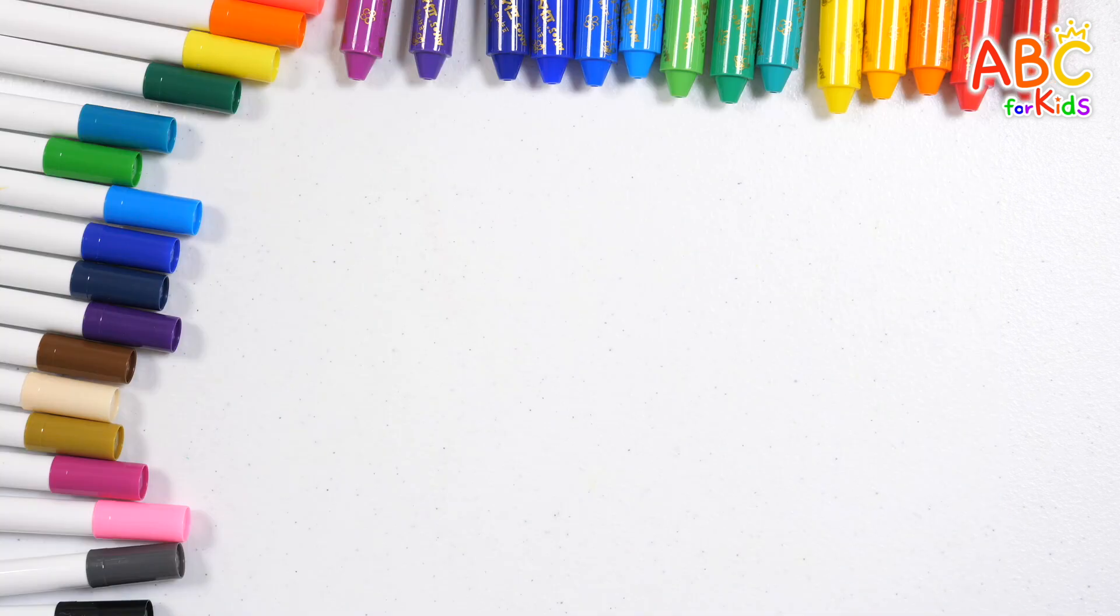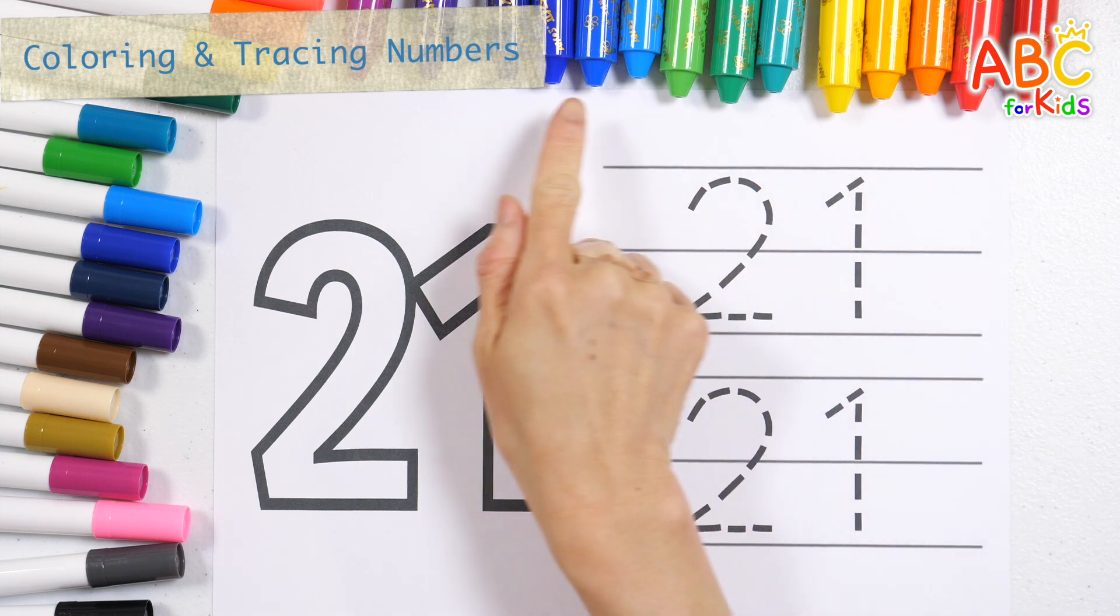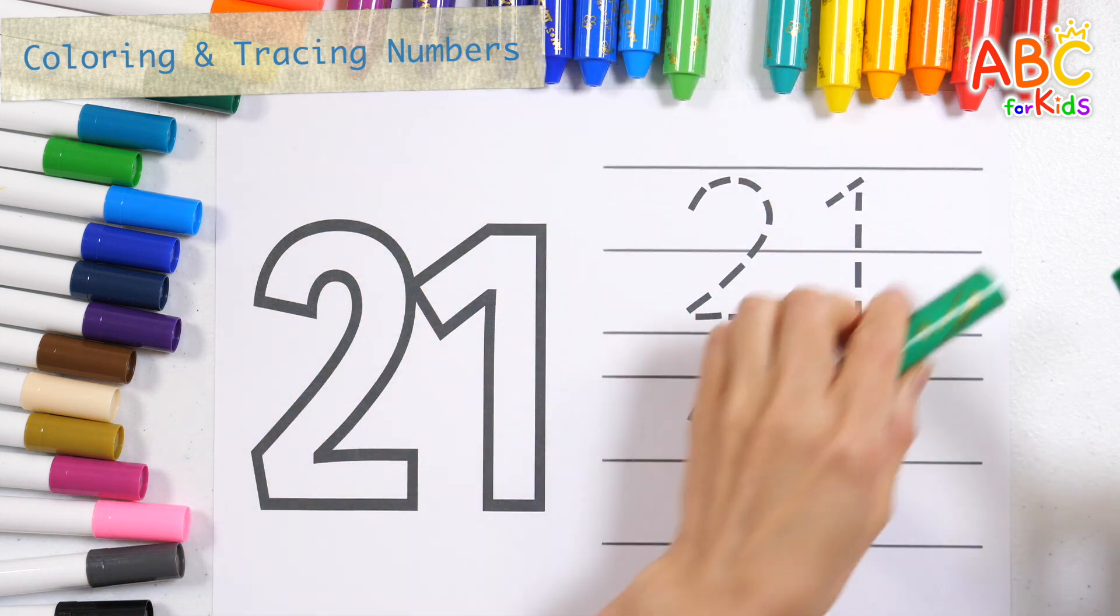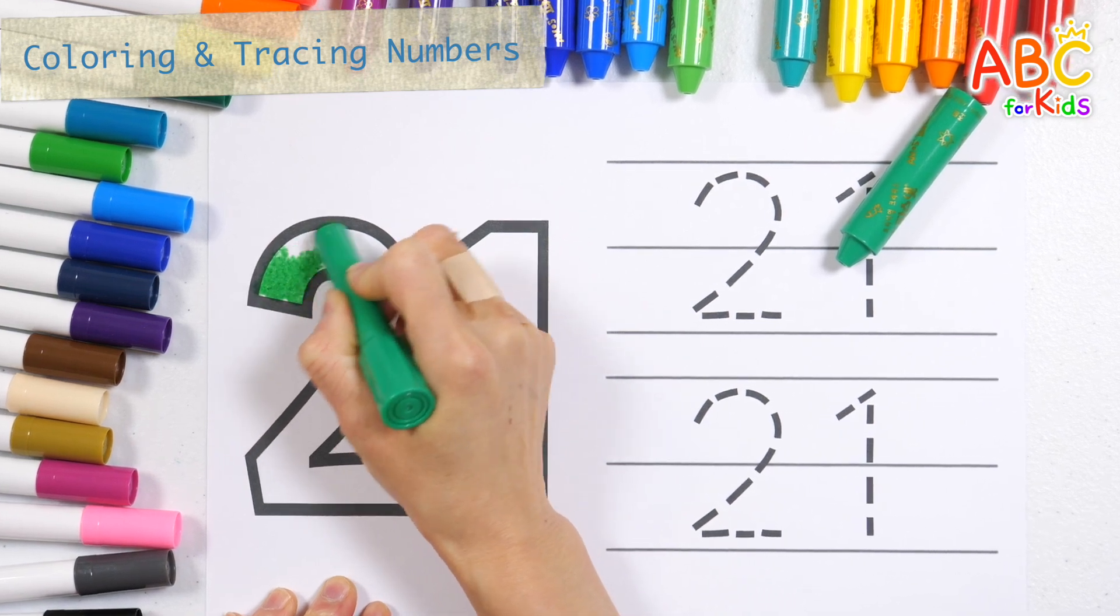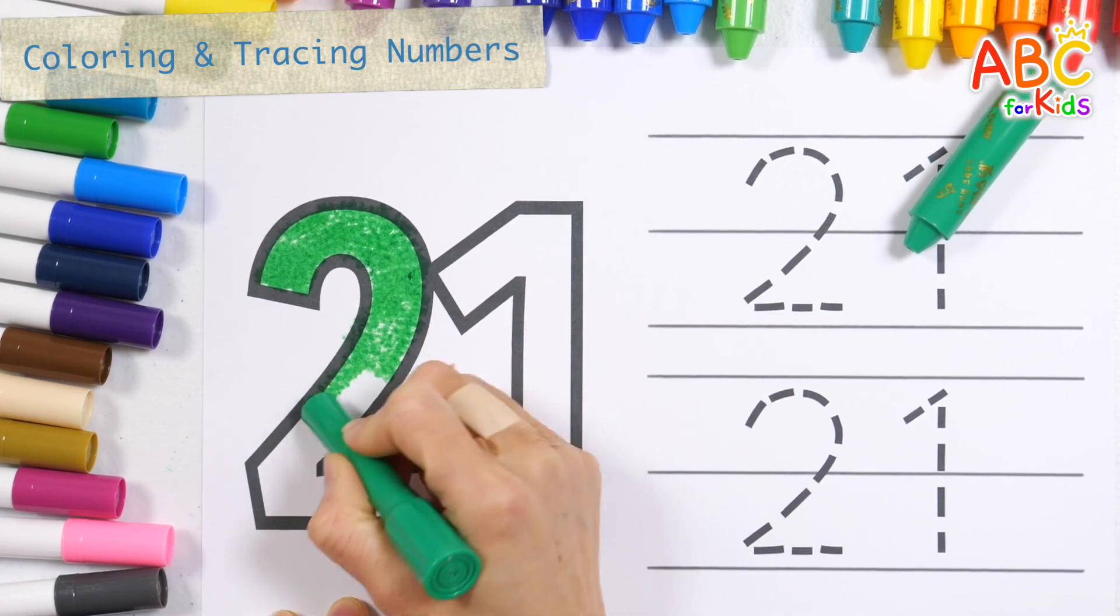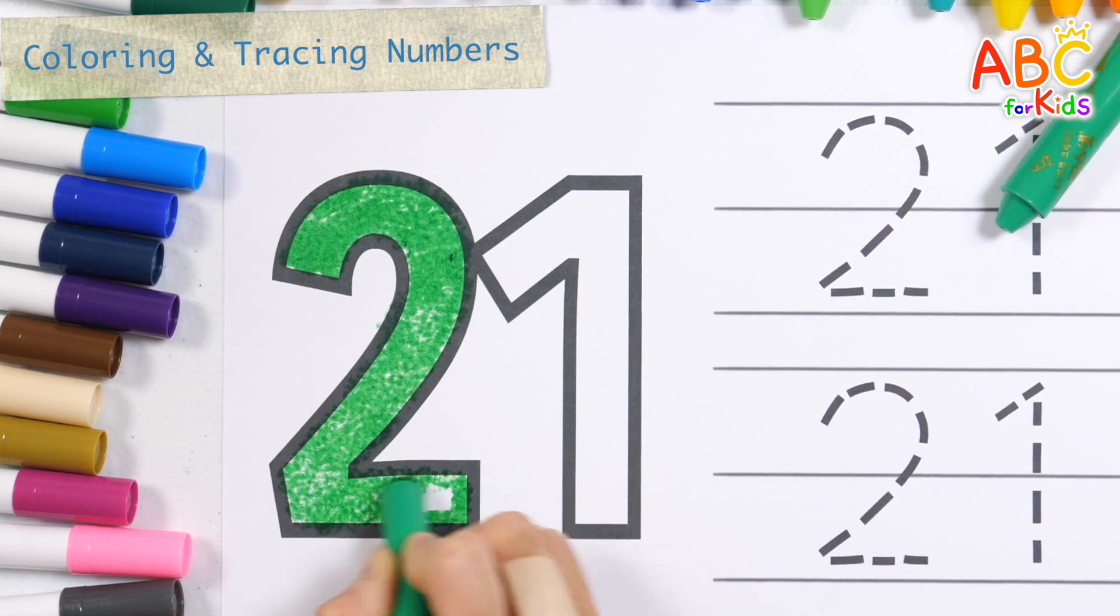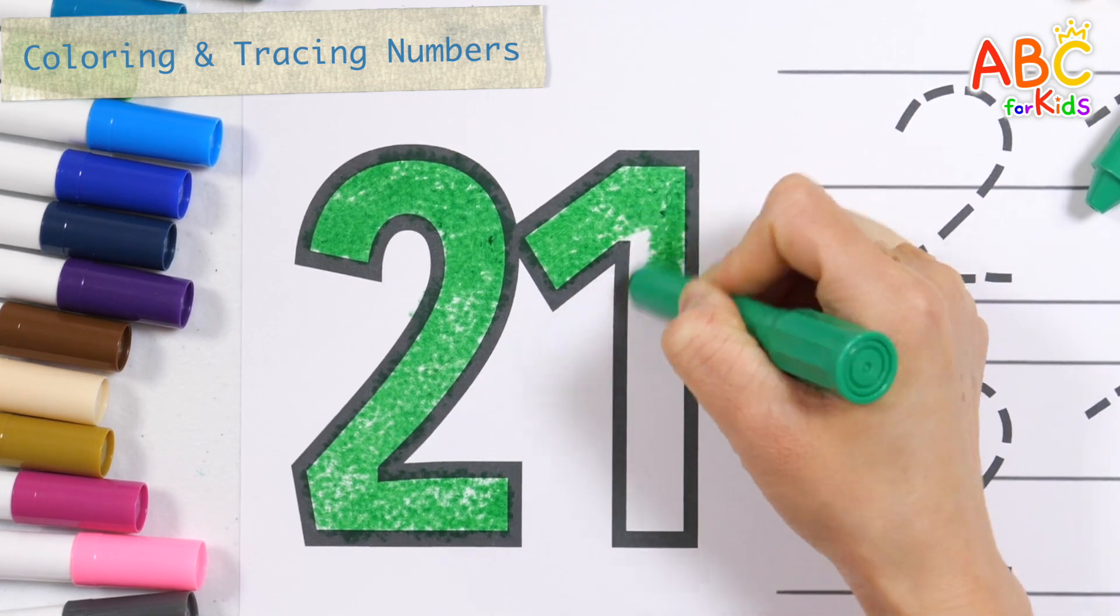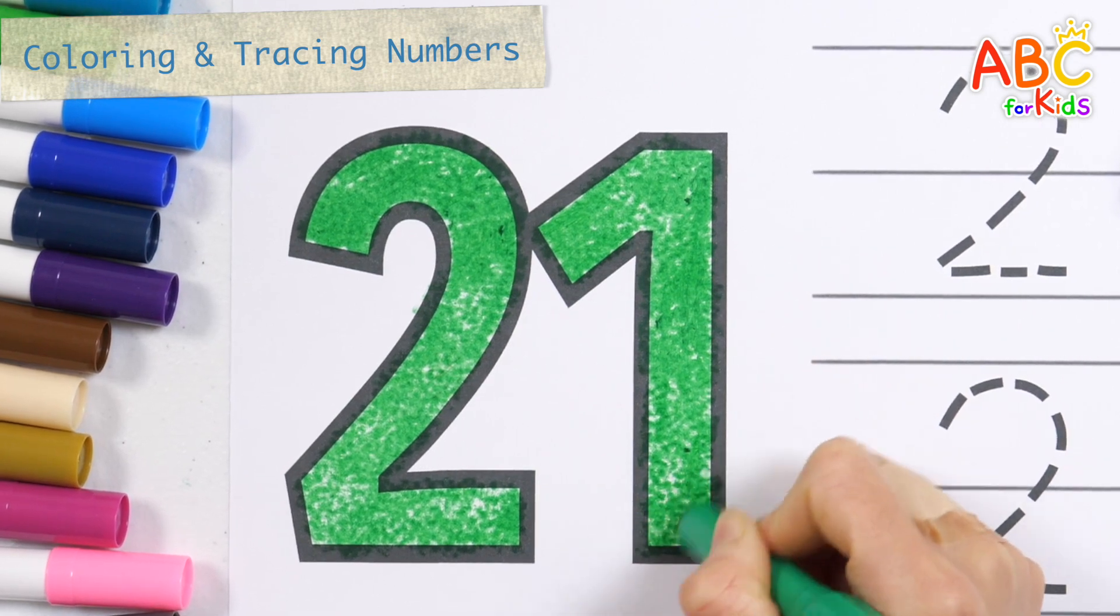Number 21. Color the numbers and practice writing numbers along the dotted lines. Color the number 21 with green crayon.